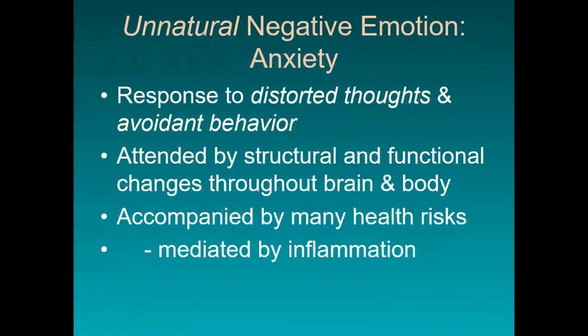Let's look now at the second class of negative emotion: unnatural negative emotion. An example of unnatural negative emotion is anxiety. Instead of being a response to an immediate environmental threat, anxiety is a response to distorted thinking and perhaps to avoidant behavior. This response is attended by structural and functional changes throughout the brain and body. And when those changes occur in a chronic way, they're accompanied by many health risks.